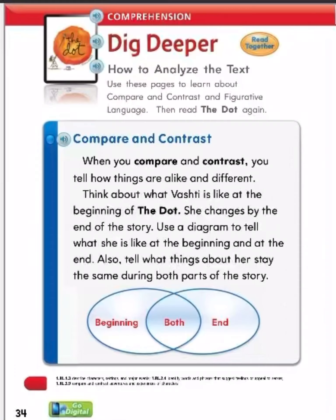Comprehension. How to analyze the text. Use these pages to learn about compare and contrast and figurative language. Then read The Dot again. Compare and contrast: when you compare and contrast, you tell how things are alike and different. Think about what Vashet is like at the beginning of The Dot. She changes by the end of the story. Use a diagram to tell what she is like at the beginning and at the end, and what things about her stay the same. Beginning — both — end.